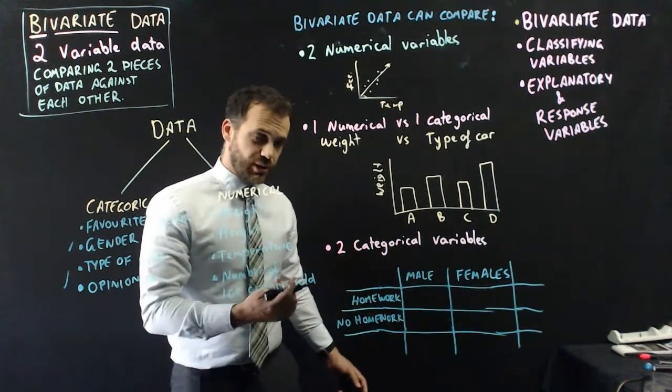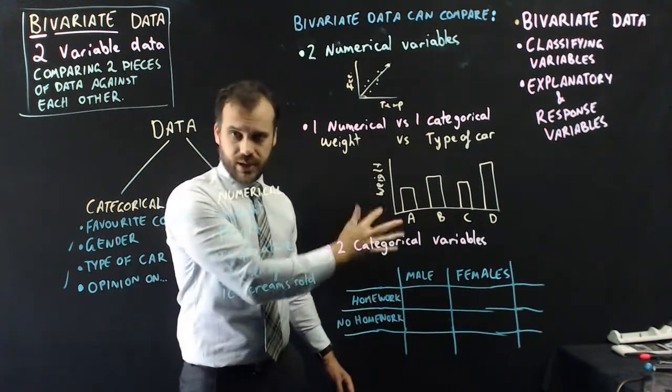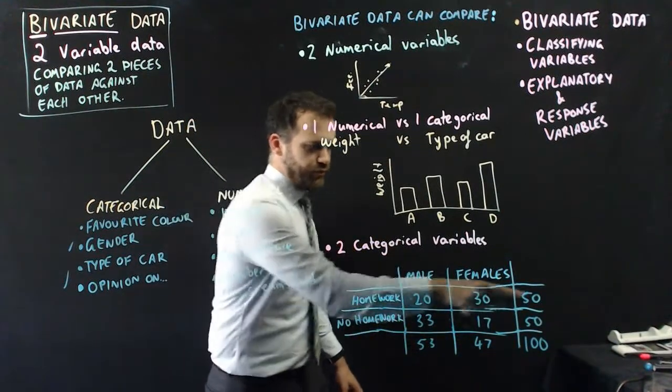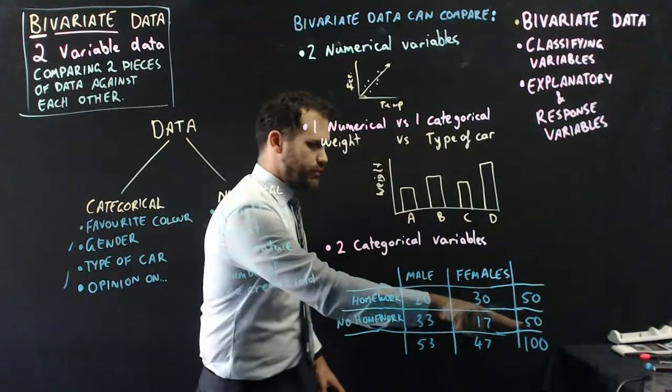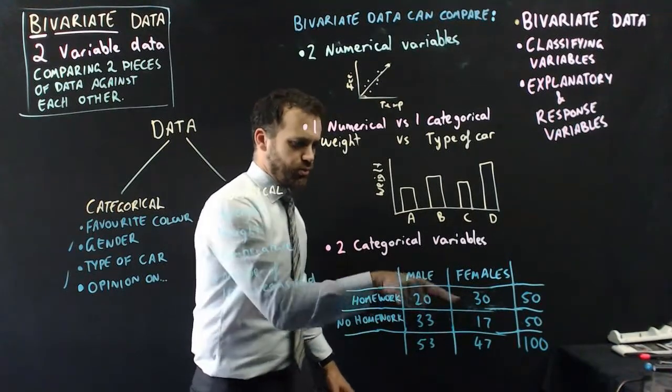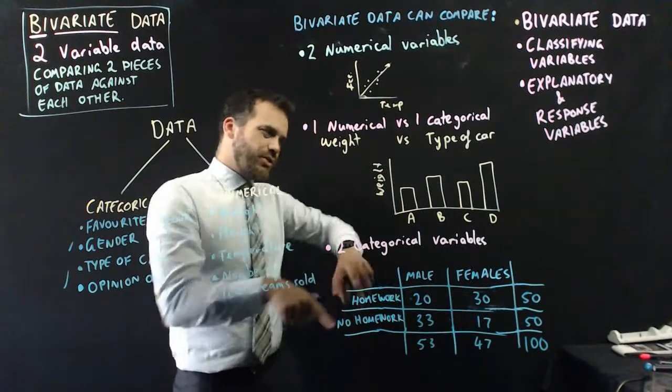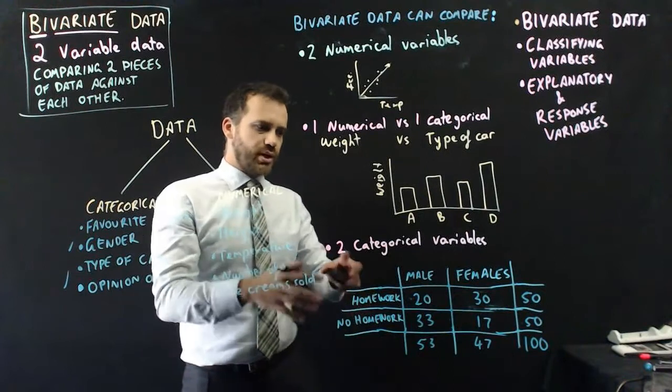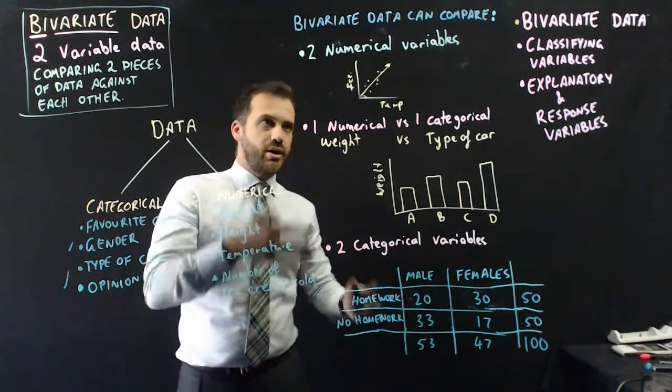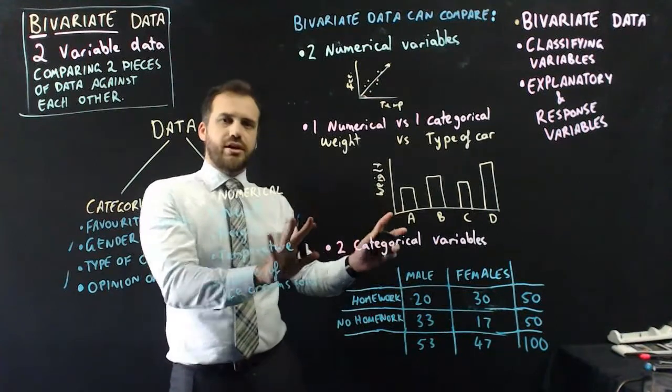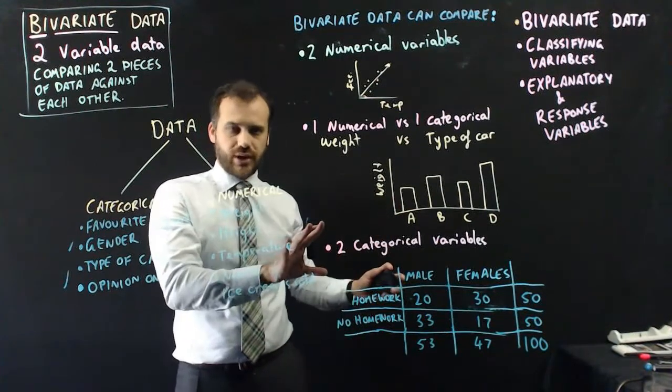So if I'm going to do this one and this one and compare them, a great way to do that is in a two-way table. So the two-way table might look something like this. And we can fill it in with some numbers. So 100 people were surveyed. 50 of them do their homework, 50 of them don't do their homework. 30 of the females do their homework, 17 of the females don't. You get the picture. Now I've tried to do that as quickly as possible just to give you a rough idea.